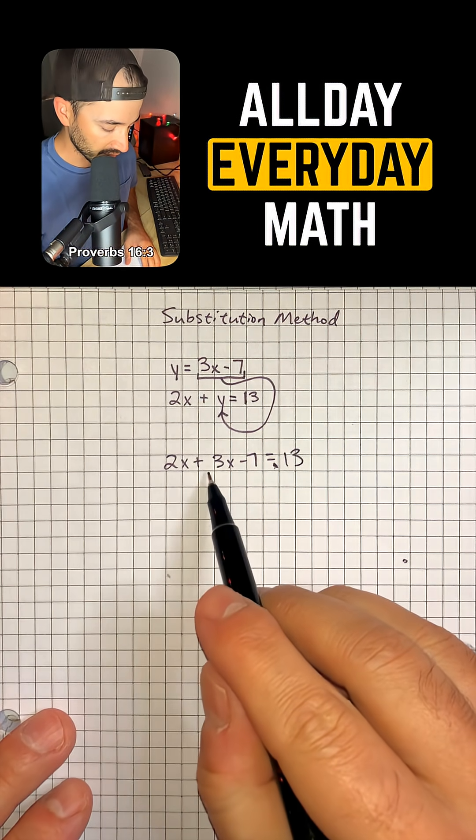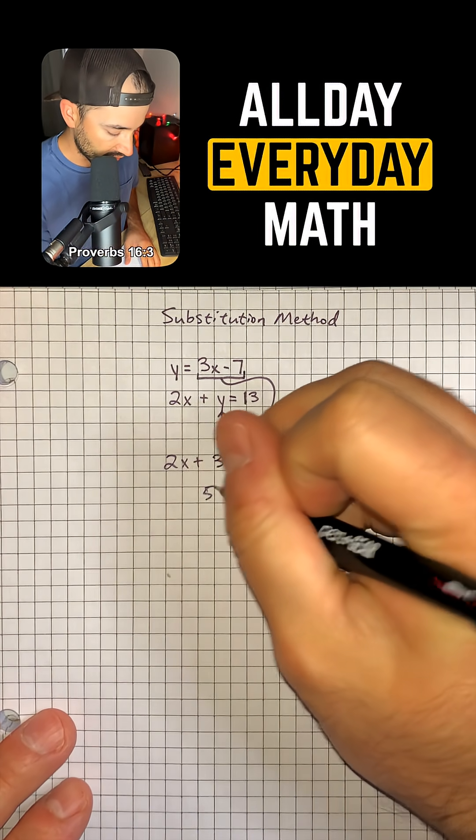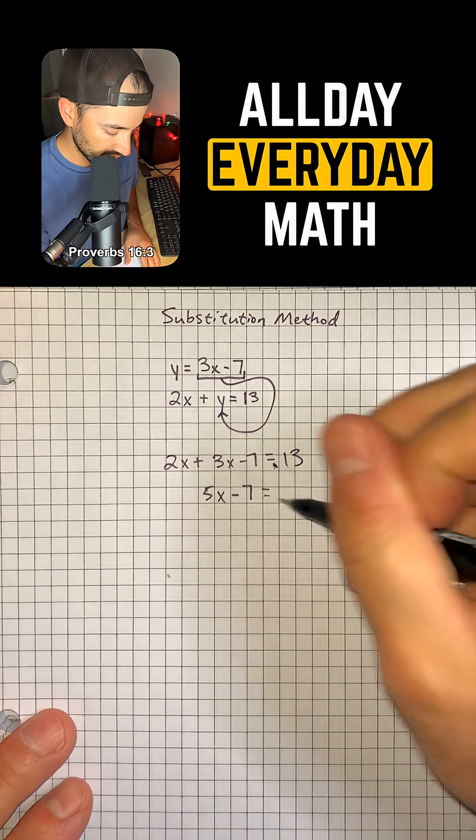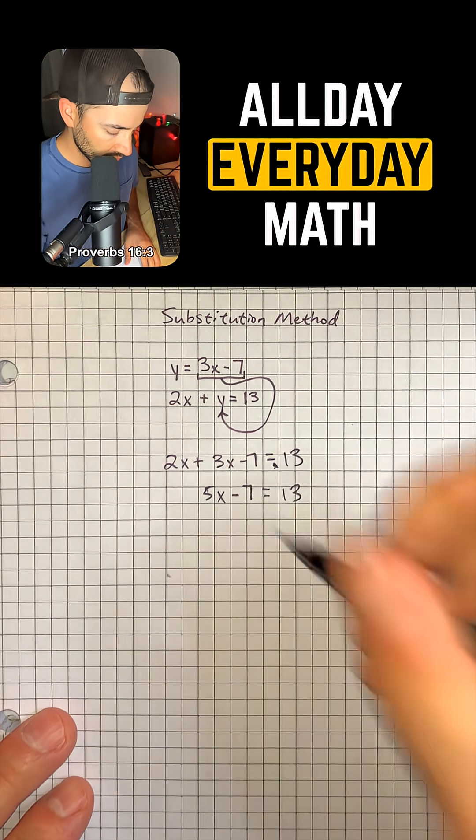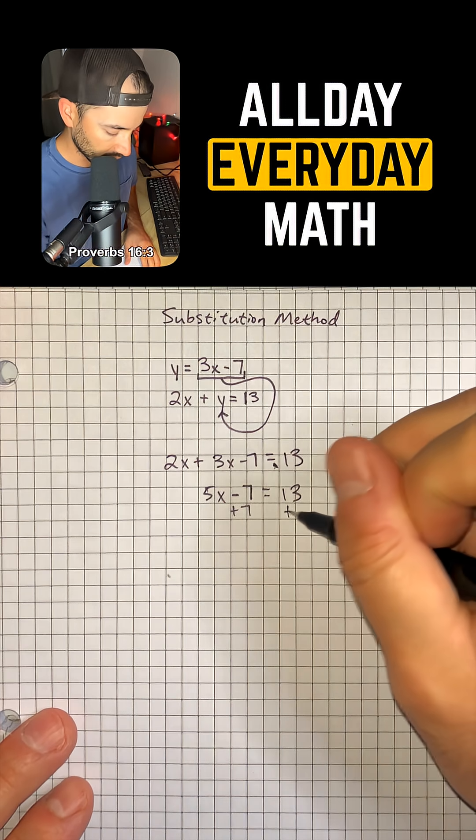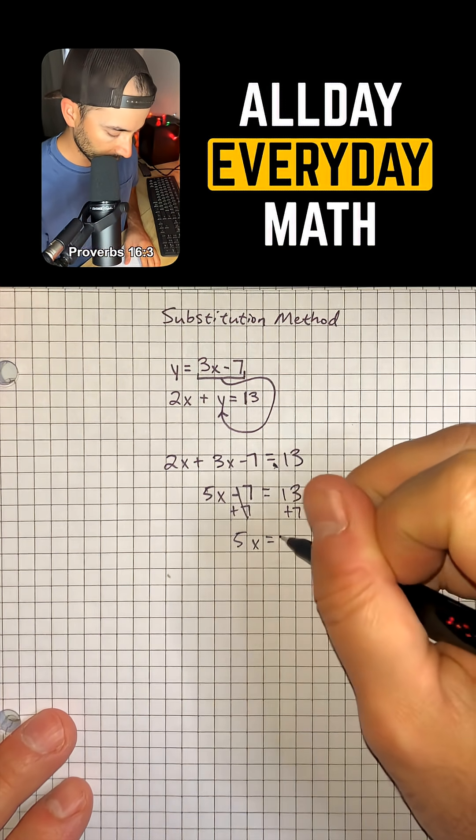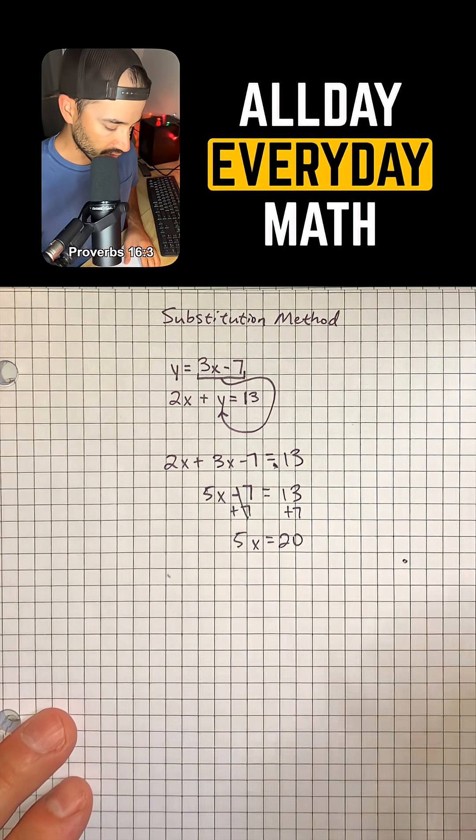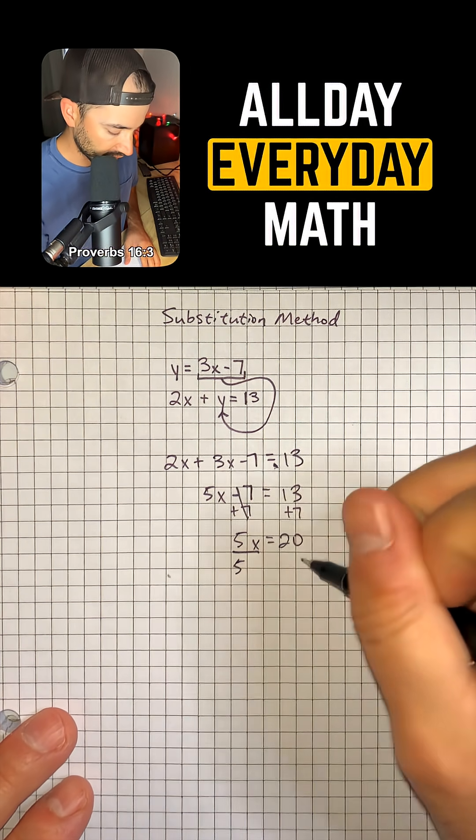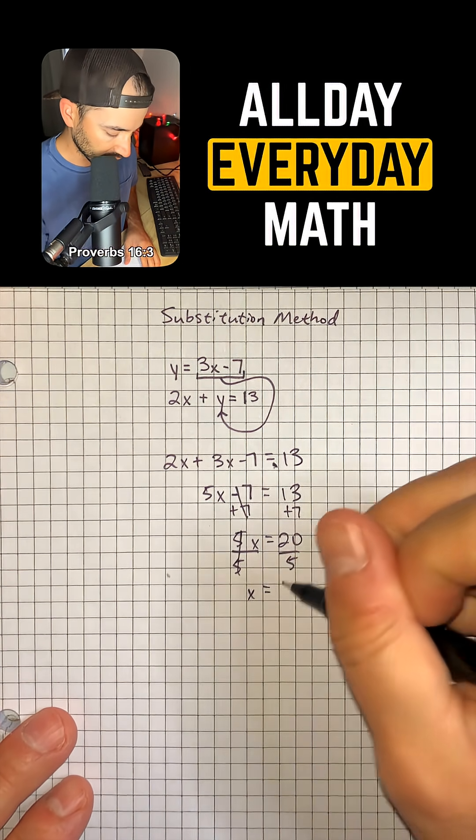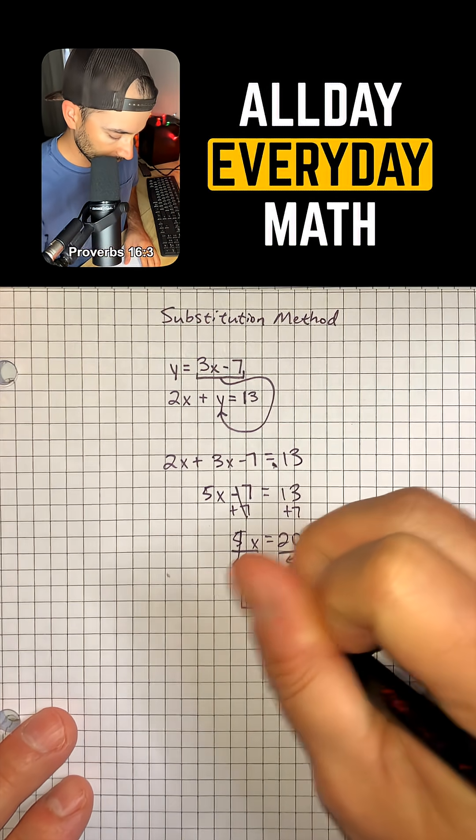So 2x and 3x are going to combine to make 5x. And then I'm going to bring down minus 7 is equal to 13. We can add 7 to both sides to get 5x is equal to 20. And then to solve for x, we can divide by 5 on both sides to get x is equal to positive 4.